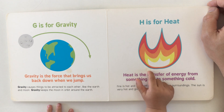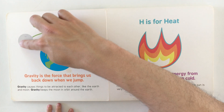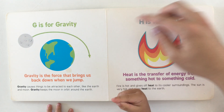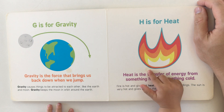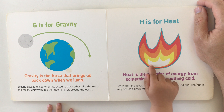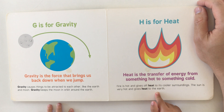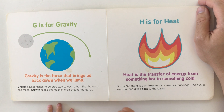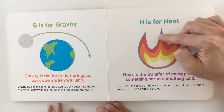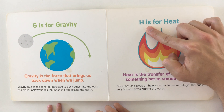G is for gravity. Gravity is the force that brings us back down when we jump. See — the moon is going around and around. Gravity causes things to be attracted to each other, like the Earth and the moon. Gravity keeps the moon in orbit around the Earth.